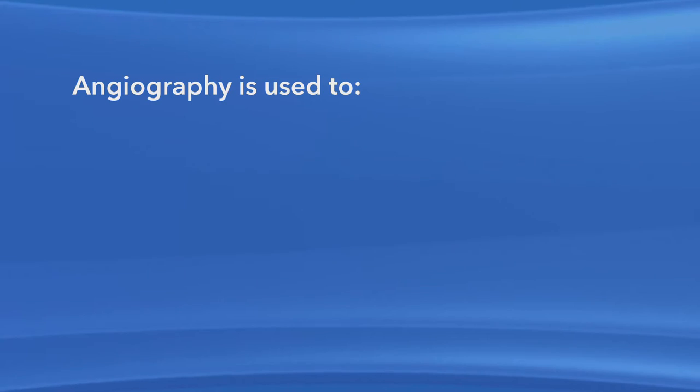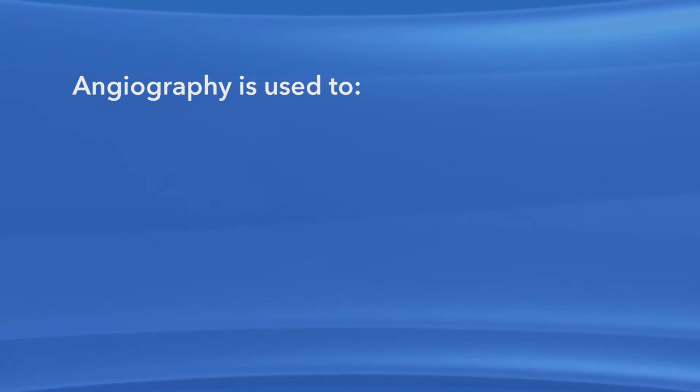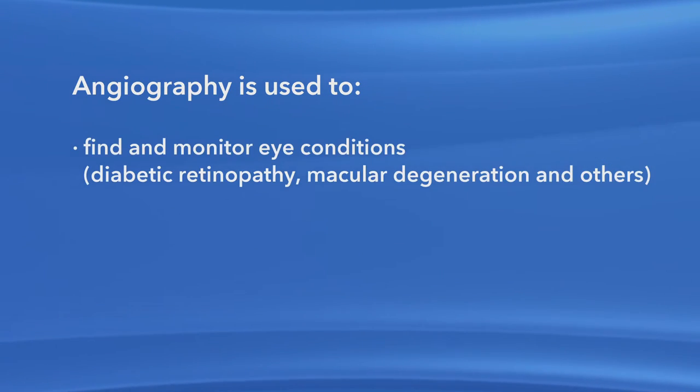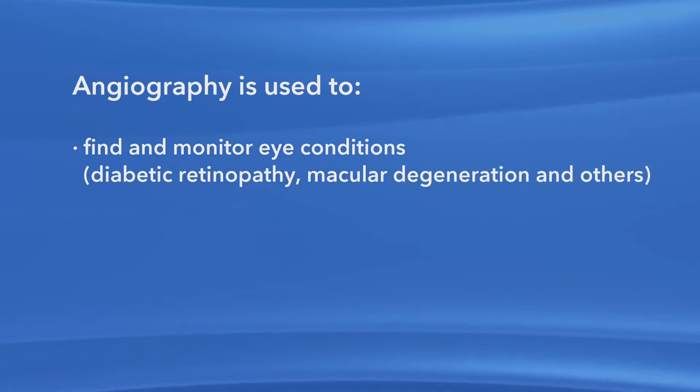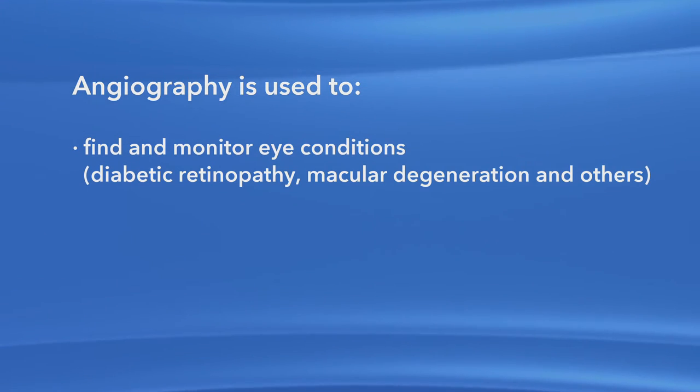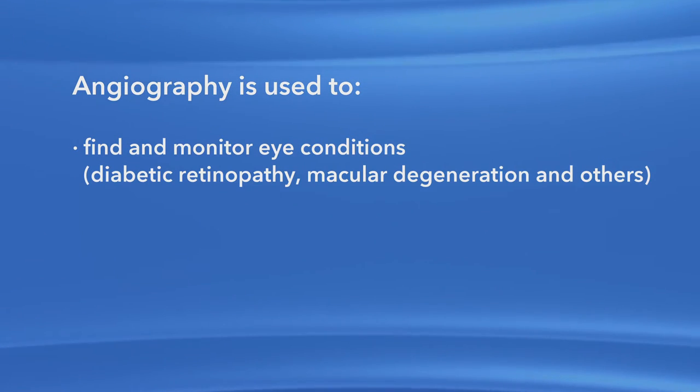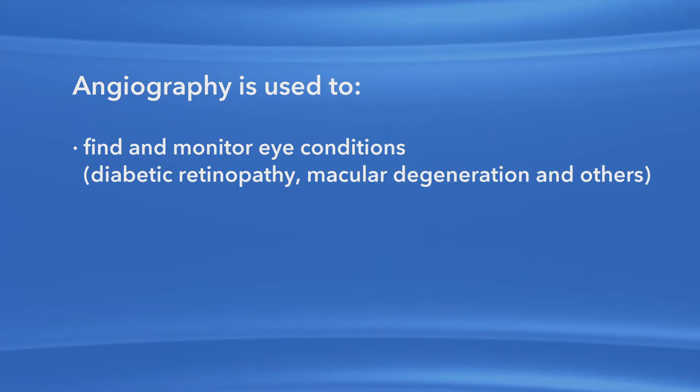The process of taking photos of the back of your eye is called angiography. Angiography helps your ophthalmologist see what is happening in the retina or in the blood vessels under the retina, called the choroid. Ophthalmologists use angiography to help diagnose and monitor certain eye conditions, such as diabetic retinopathy and macular degeneration, among others.